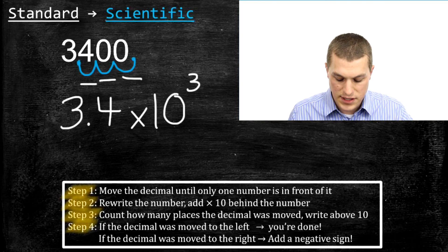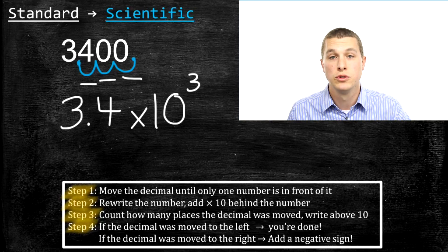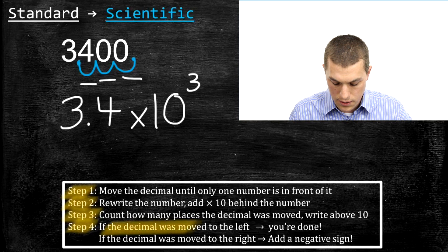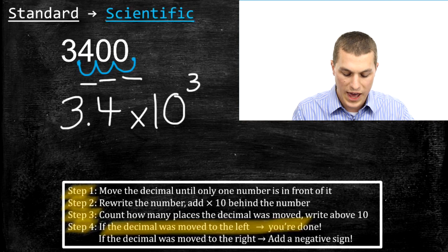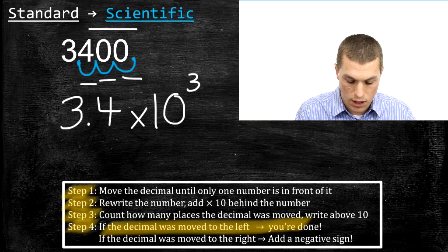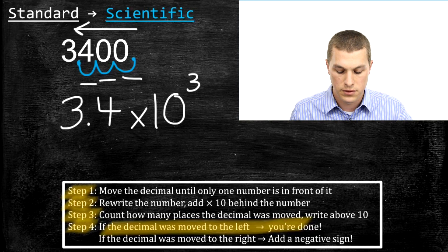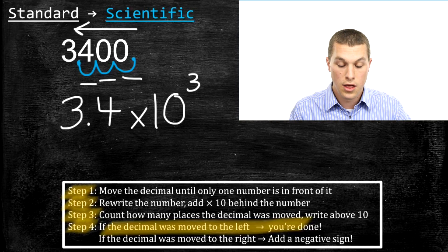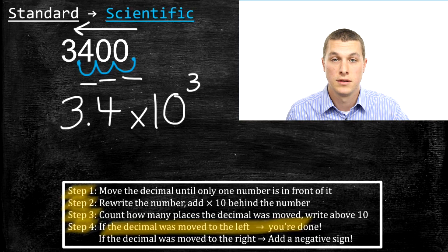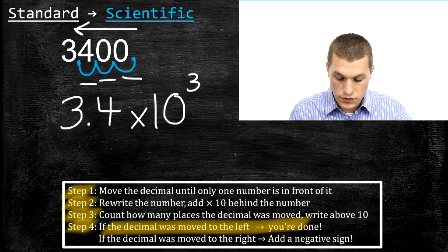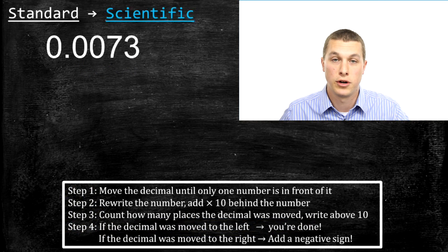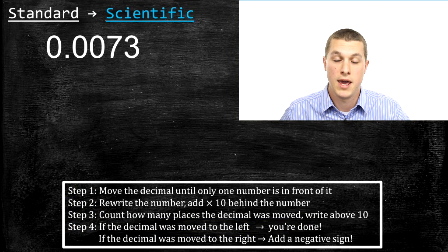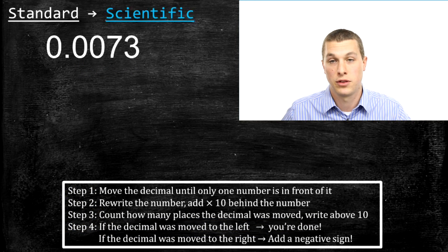Step four says: if the decimal was moved to the left, you're done. In our example, we have in fact moved the decimal to the left — it started on the right and now it's to the left. So we're done: 3.4 times ten to the third is 3,400 in scientific notation. Now we're going to do another example where we start with a small number. 3,400 was big, and now 0.0073 is small.